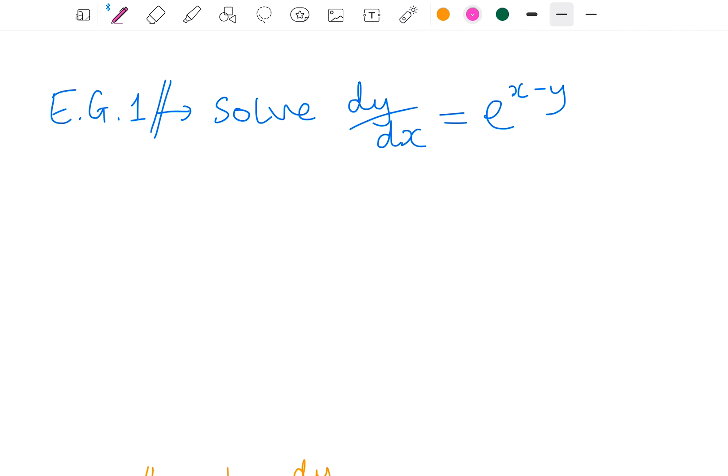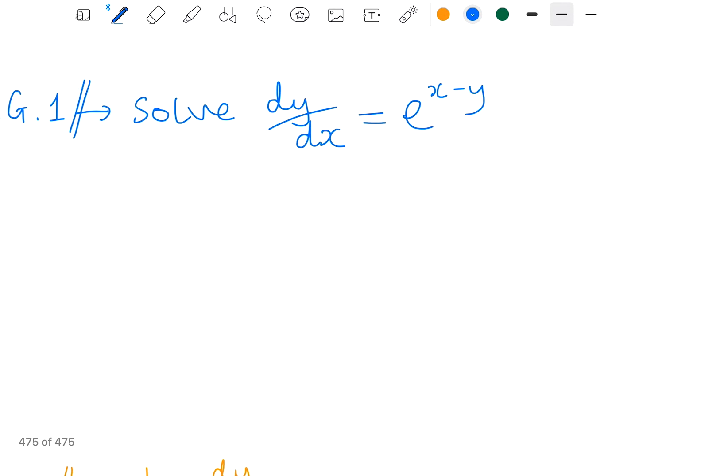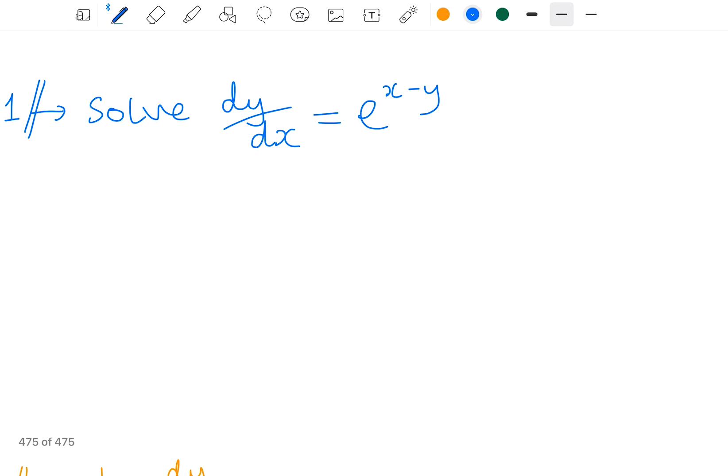So for example, I have dy by dx equals e to the power of x minus y. Firstly, is it in the separable form? Well, not yet, but I could write this as e to the power of x over e to the power of y.